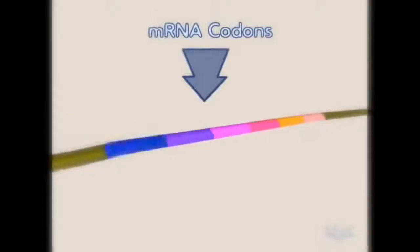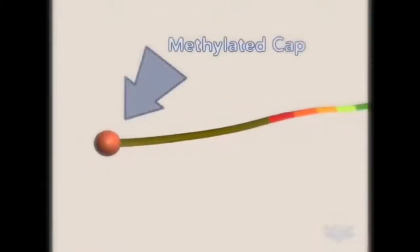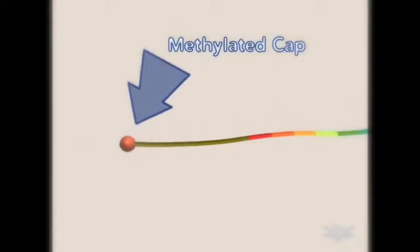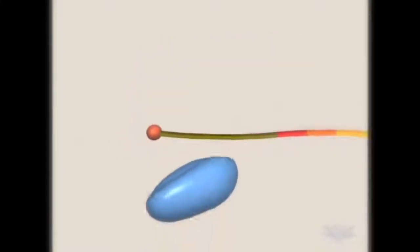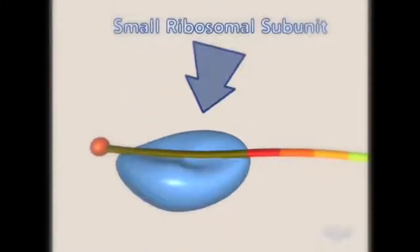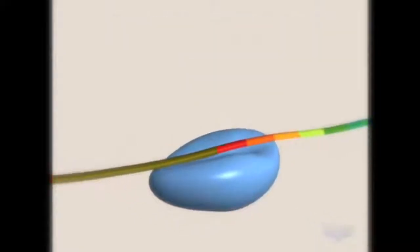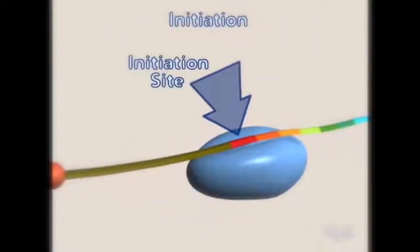mRNA also contains codons that will encode for specific amino acids. A methylated cap is found at the 5' end. Translation initiation begins when the small subunit of the ribosome attaches to the cap and moves to the translation initiation site.